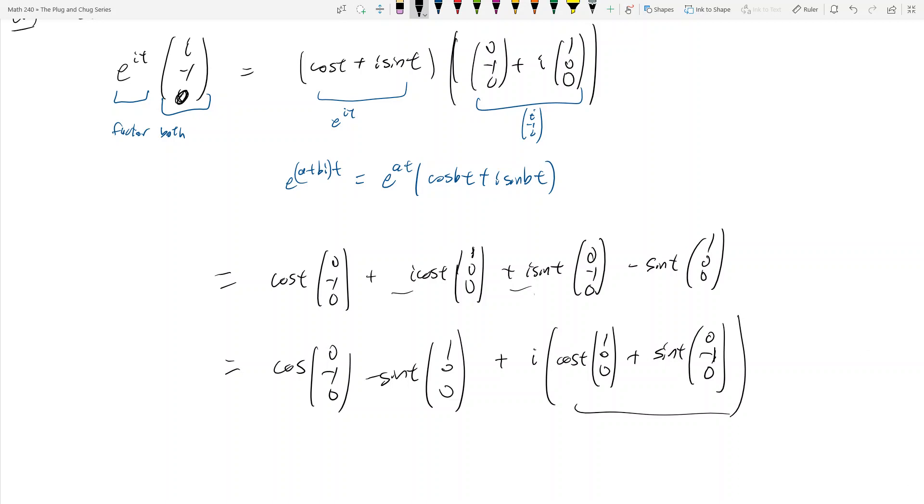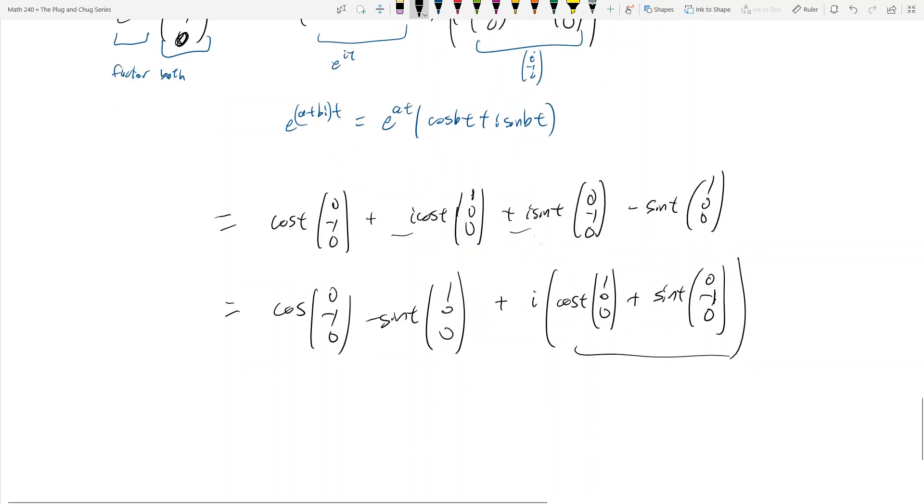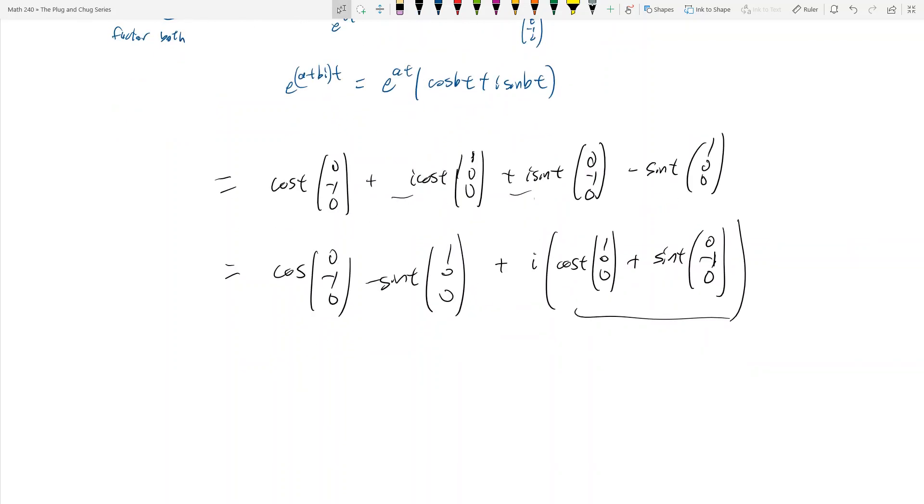And once we're here, we are more or less done. Because what happens? The following happens. This is a solution right here. This is a solution. And then this part inside the parentheses without the i, a solution, and you want to drop the i. Okay?